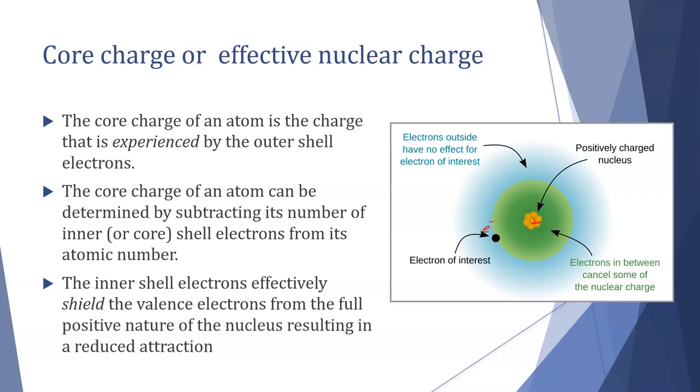We need to take it from the perspective of the electron that we're looking at. Typically this is our valence shell electrons. The core charge of an atom is determined by taking the atomic number, the number of protons, Z, and subtracting the shielding electrons.